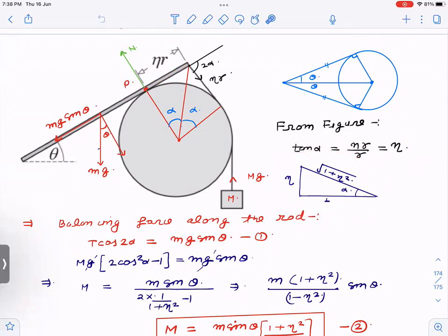I have drawn this triangle so that if we need sin α and cos α you can very easily calculate. Now, this angle is 90 minus α, this is also 90 minus α, and this makes the angle 2α. And α is known to us as tan inverse η.